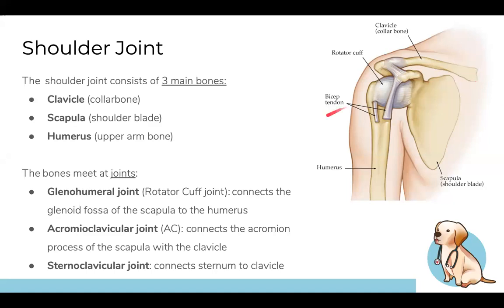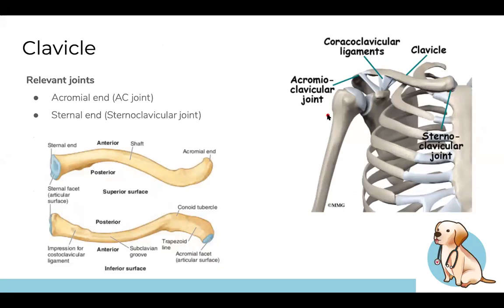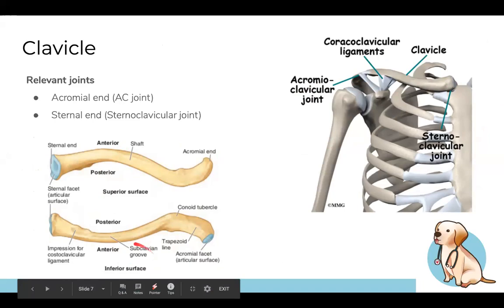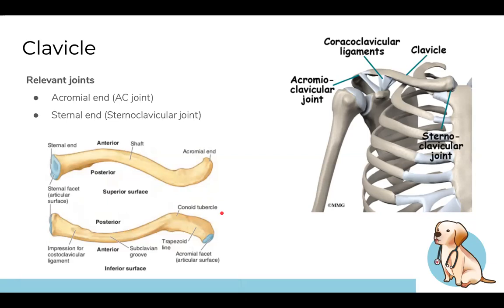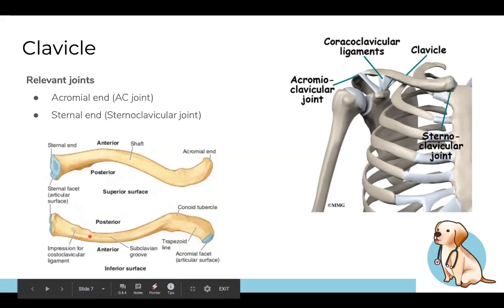Zooming in on individual bones — the clavicle, or collarbone. The relevant parts are the acromial end, which connects to the acromion, and the sternal end, which connects to the sternum. There's also a shaft in the middle with grooves: the subclavian groove, trapezoid line, and conoid tubercle — these are landmarks where muscles attach onto the clavicle.